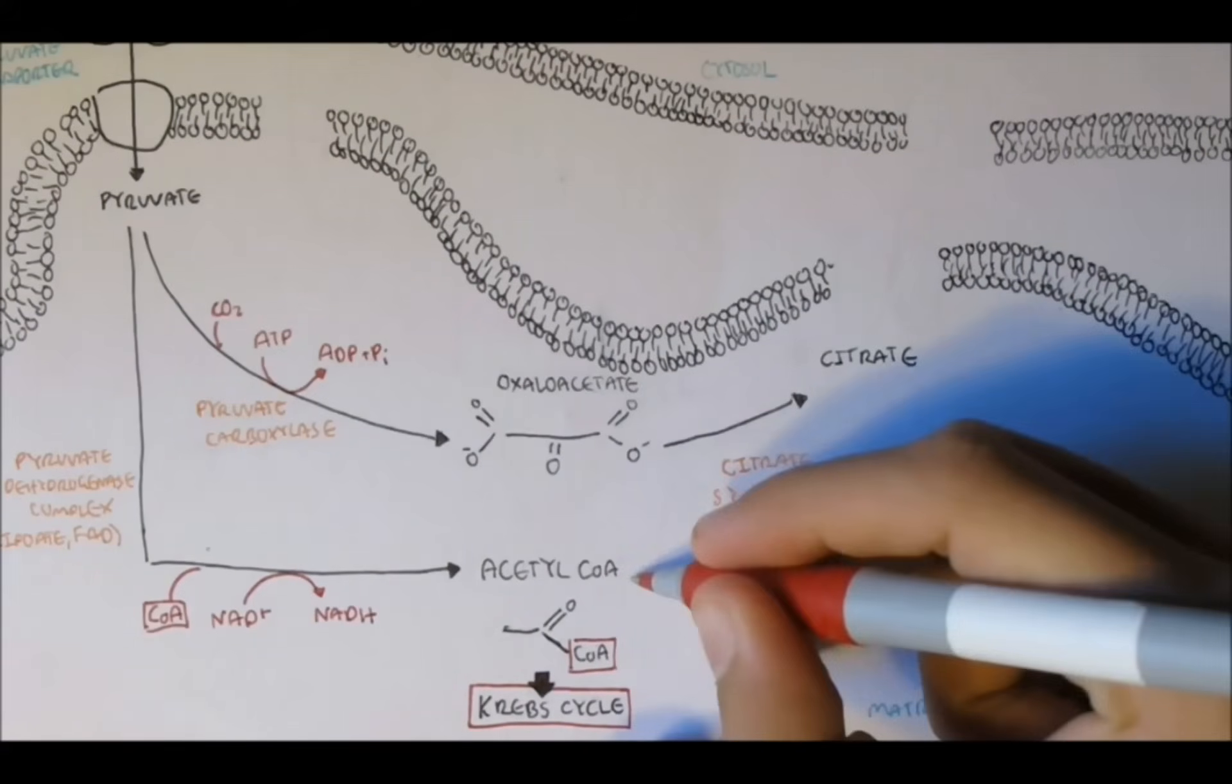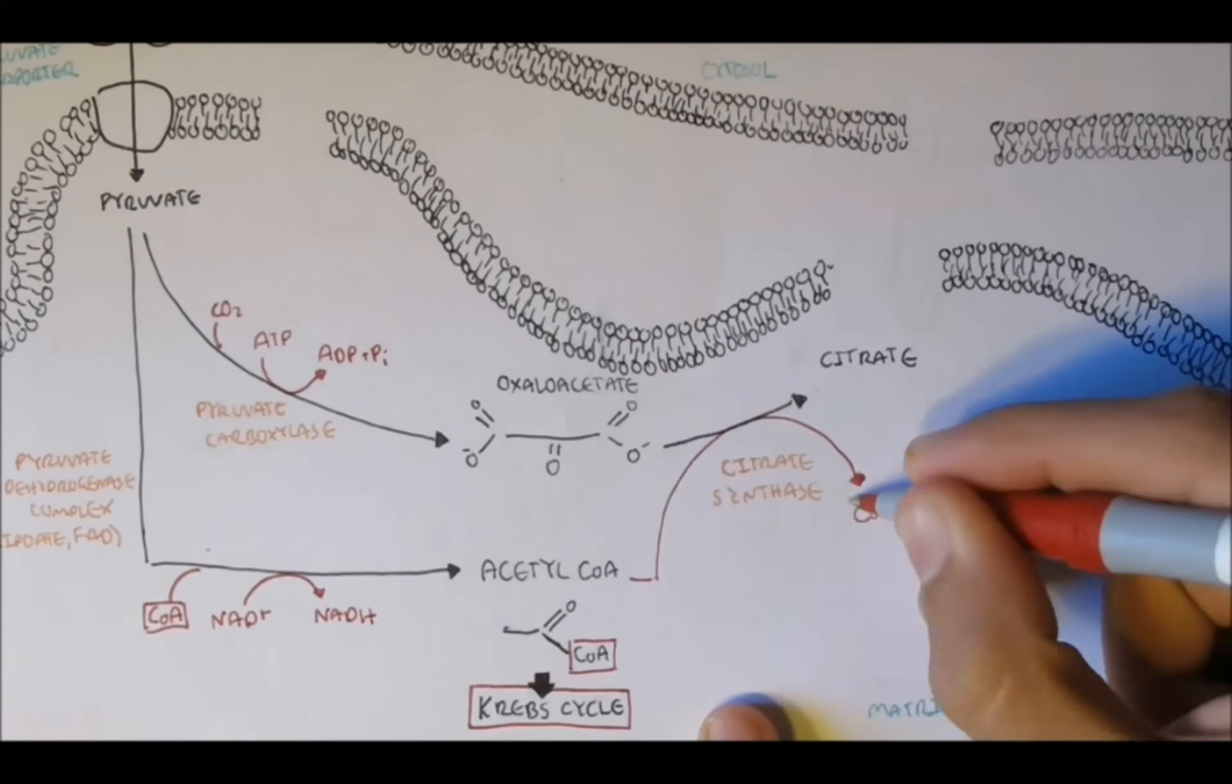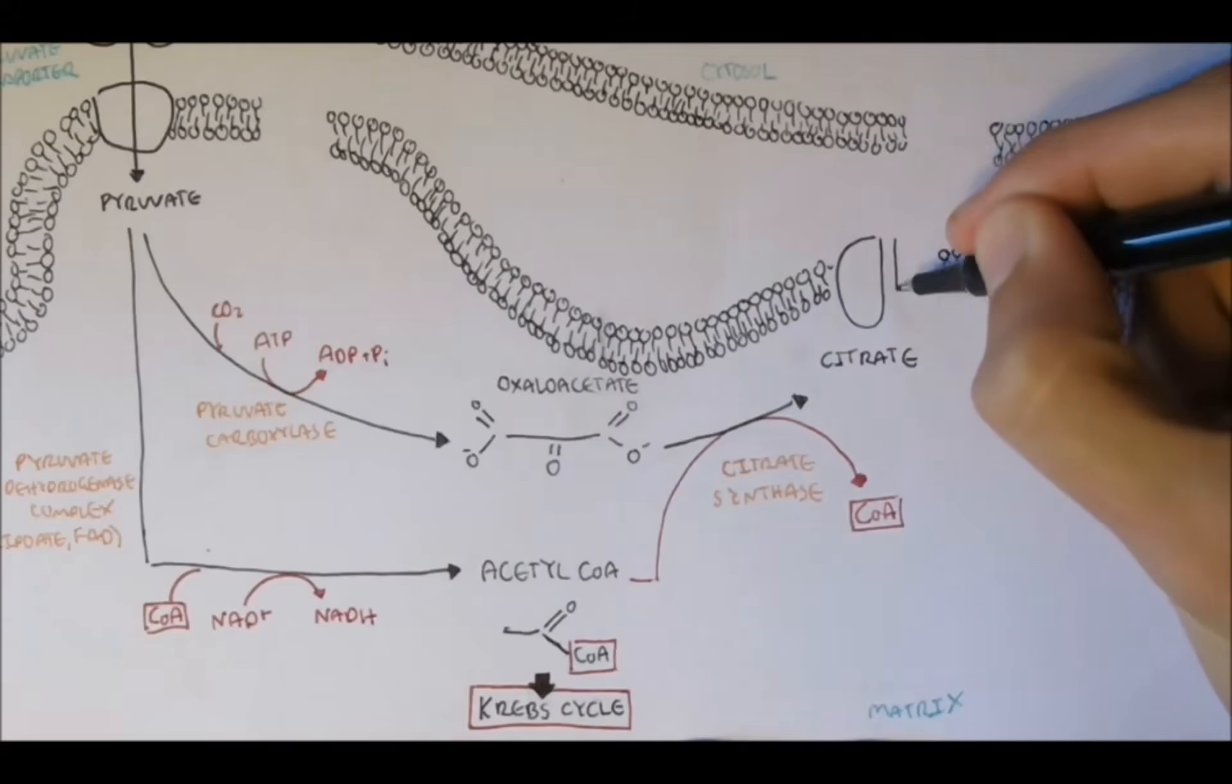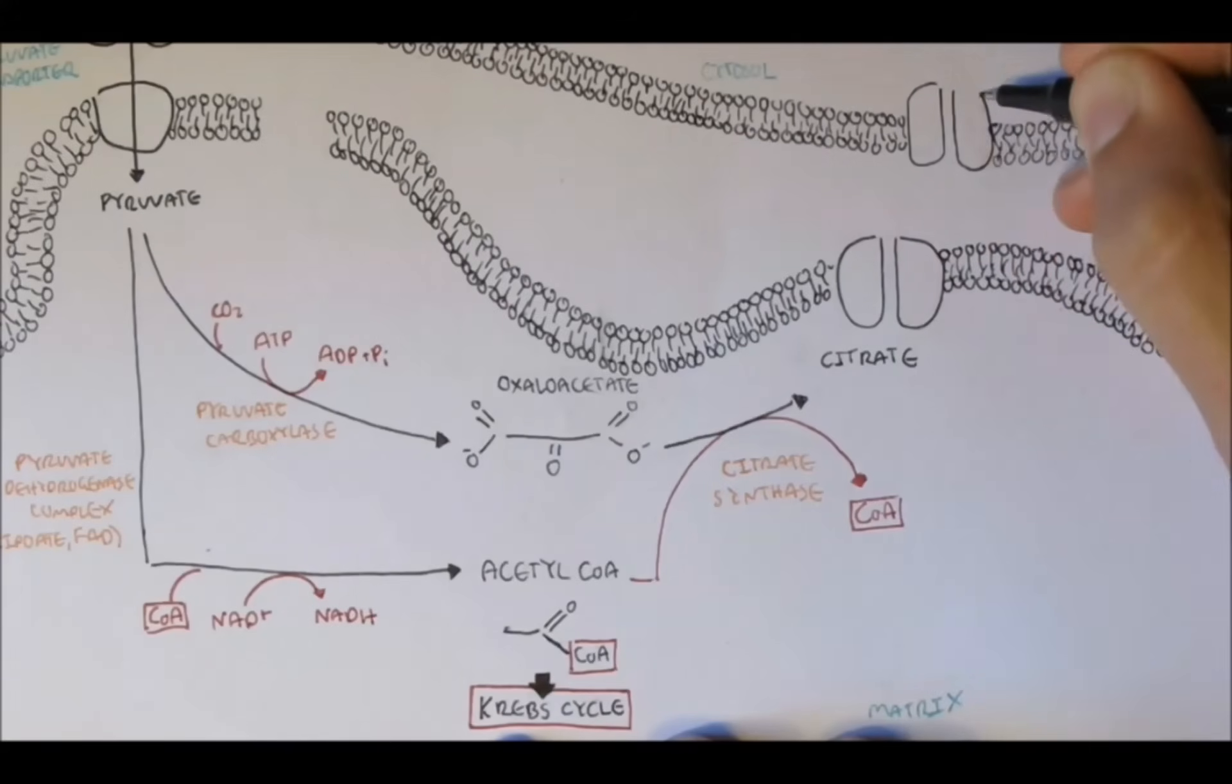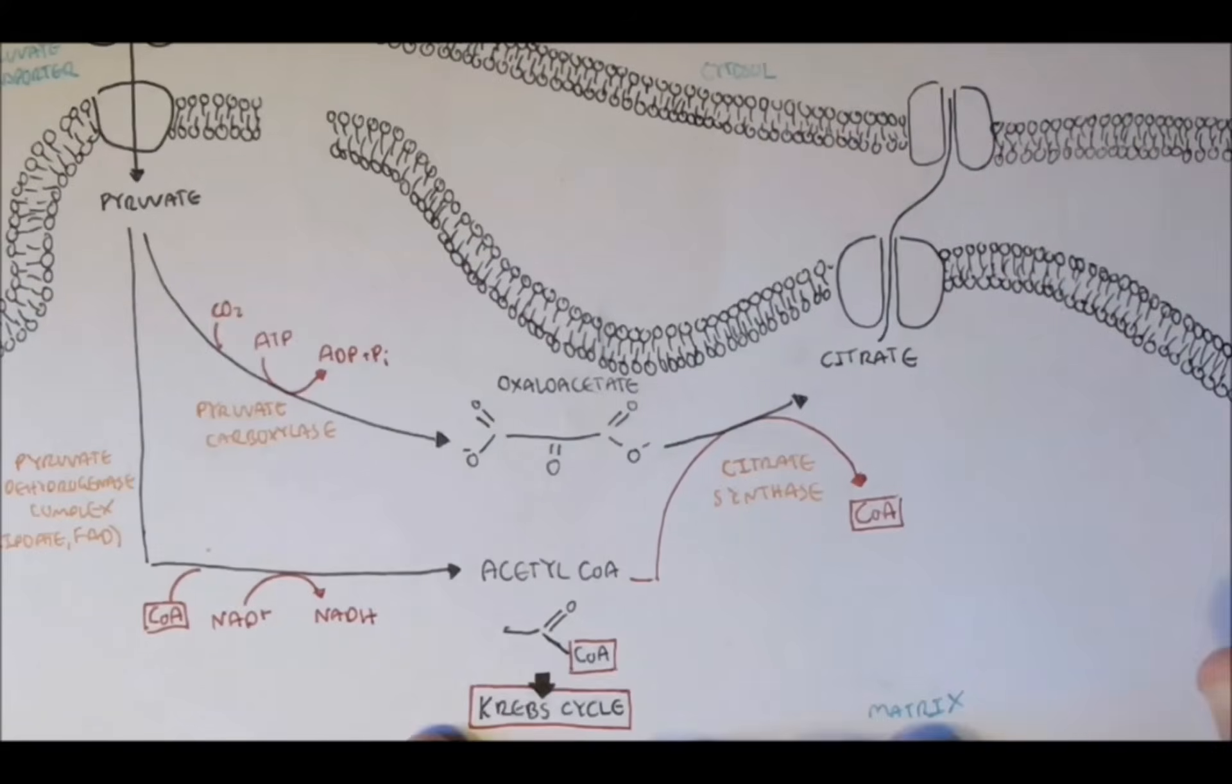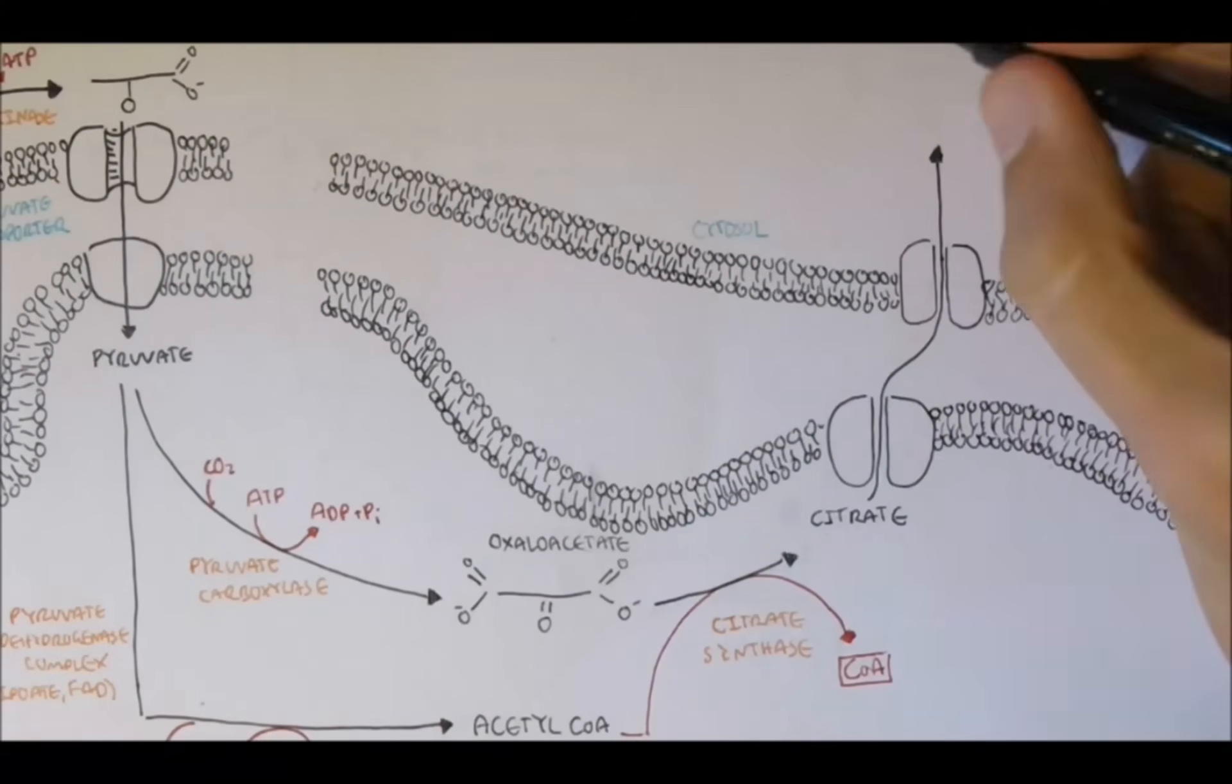So, acetyl-CoA comes in and transfers its acetyl group and releasing CoA. So, now acetyl-CoA is on citrate. Citrate will then move out of the mitochondria through the inner and outer mitochondrial membrane. So, citrate moves through a transporter called citrate transporter.